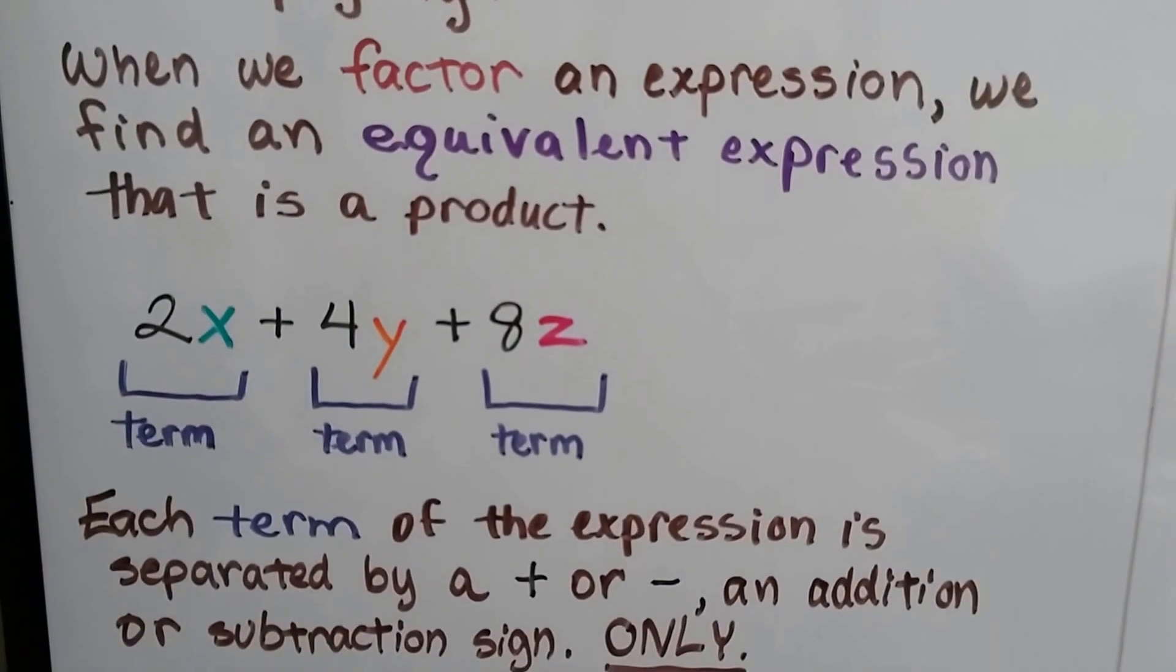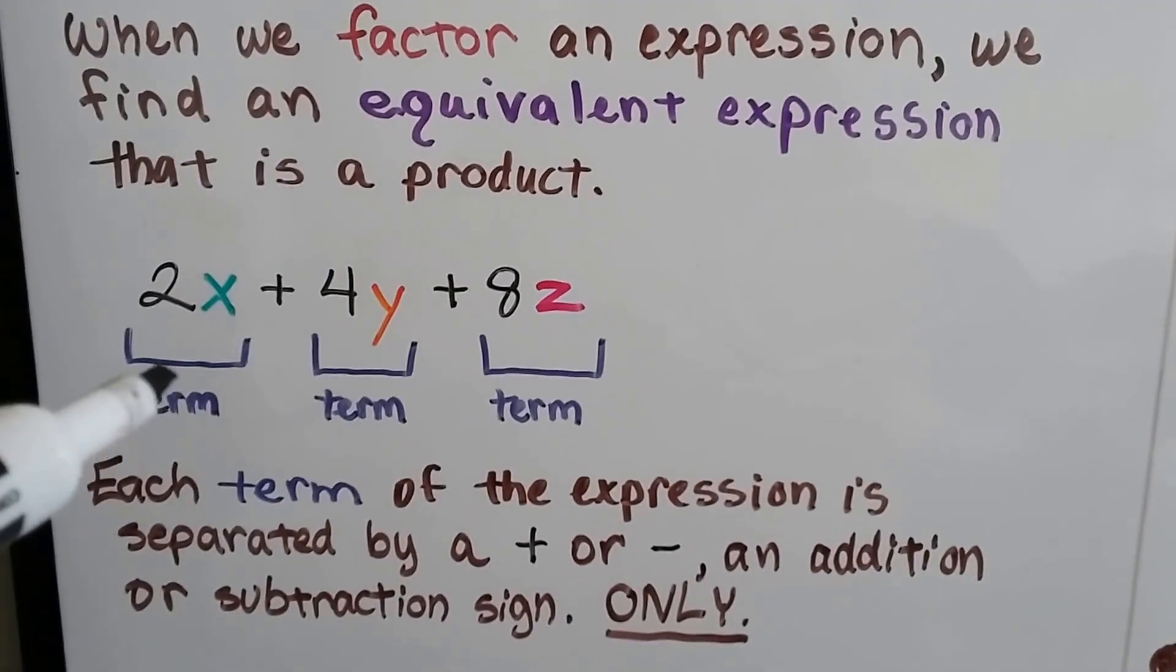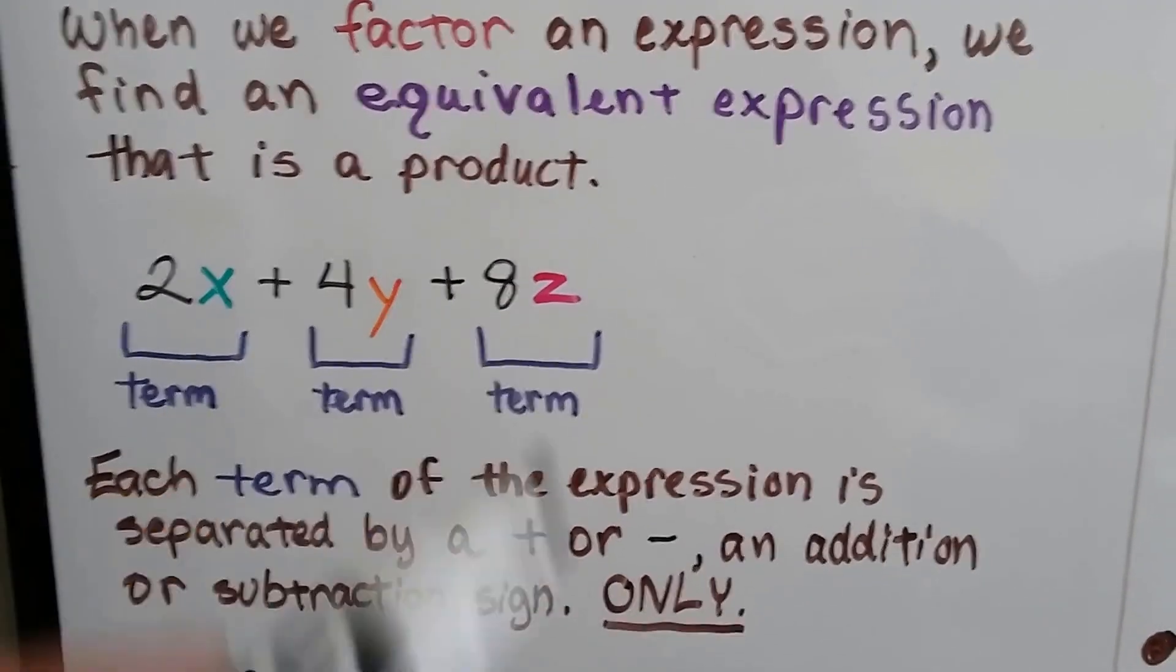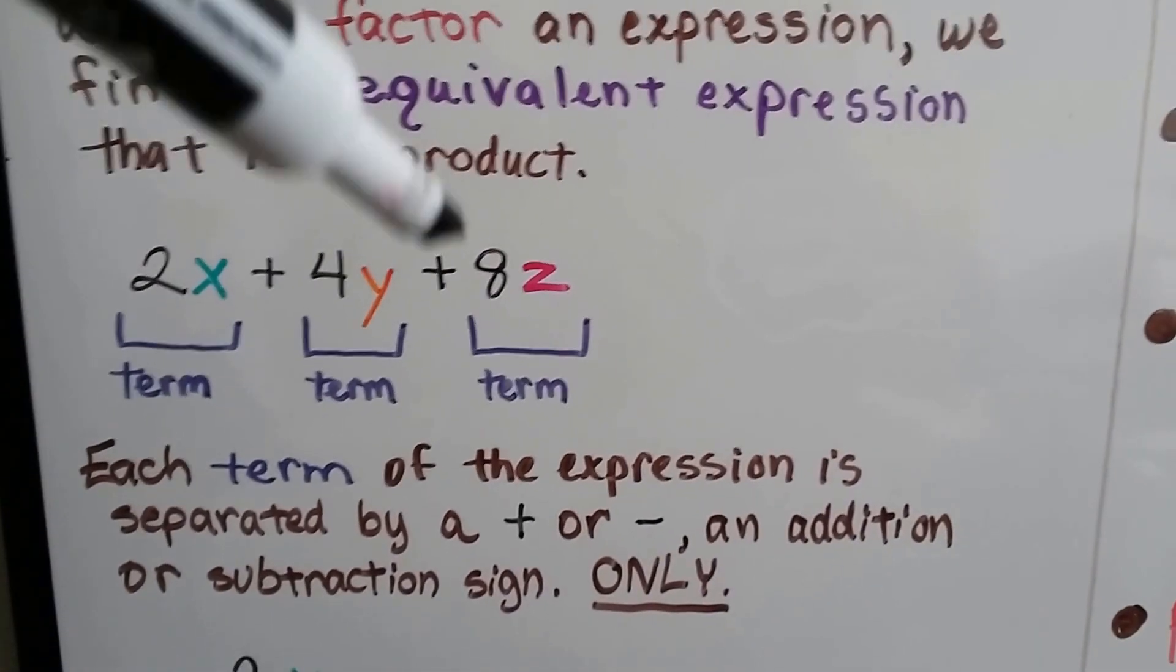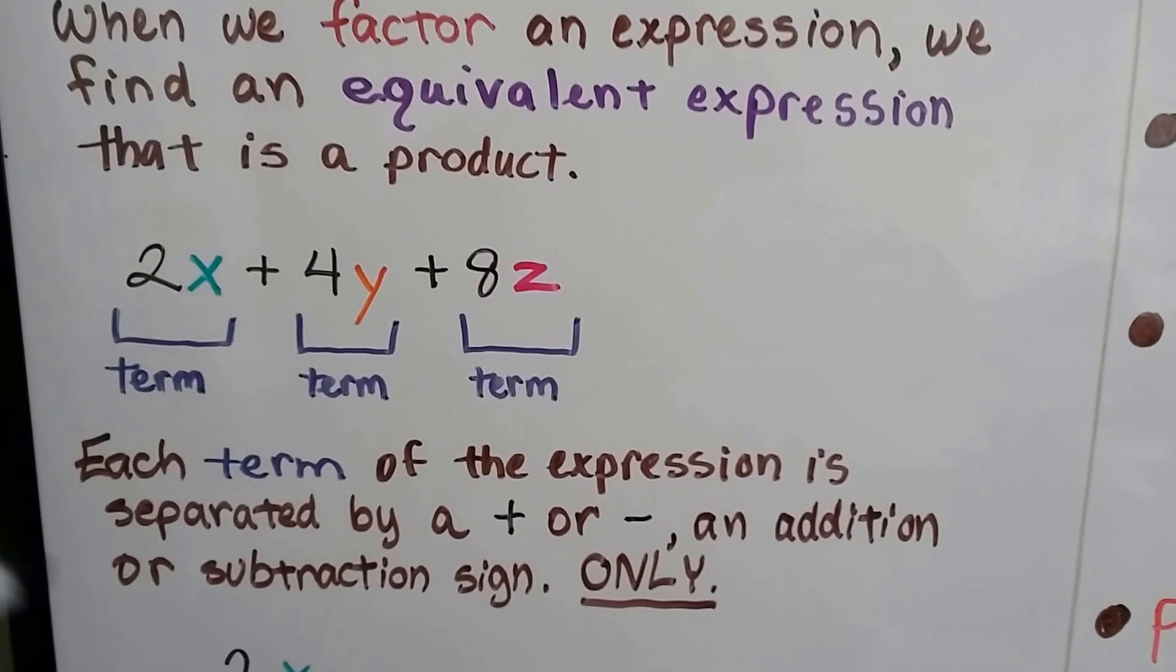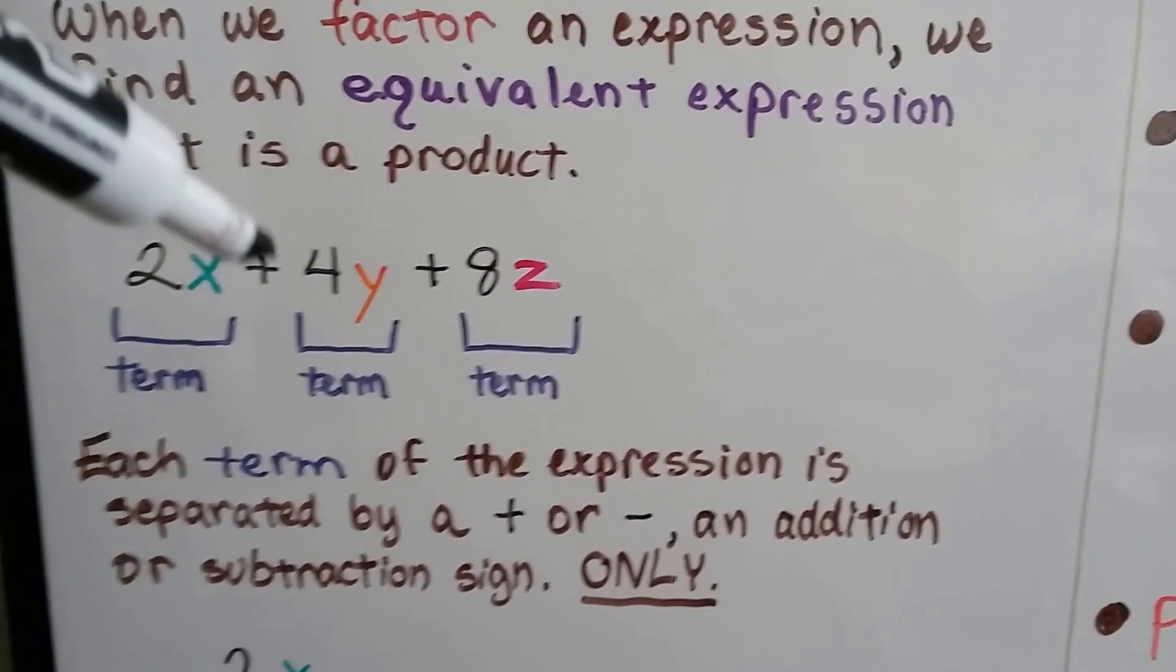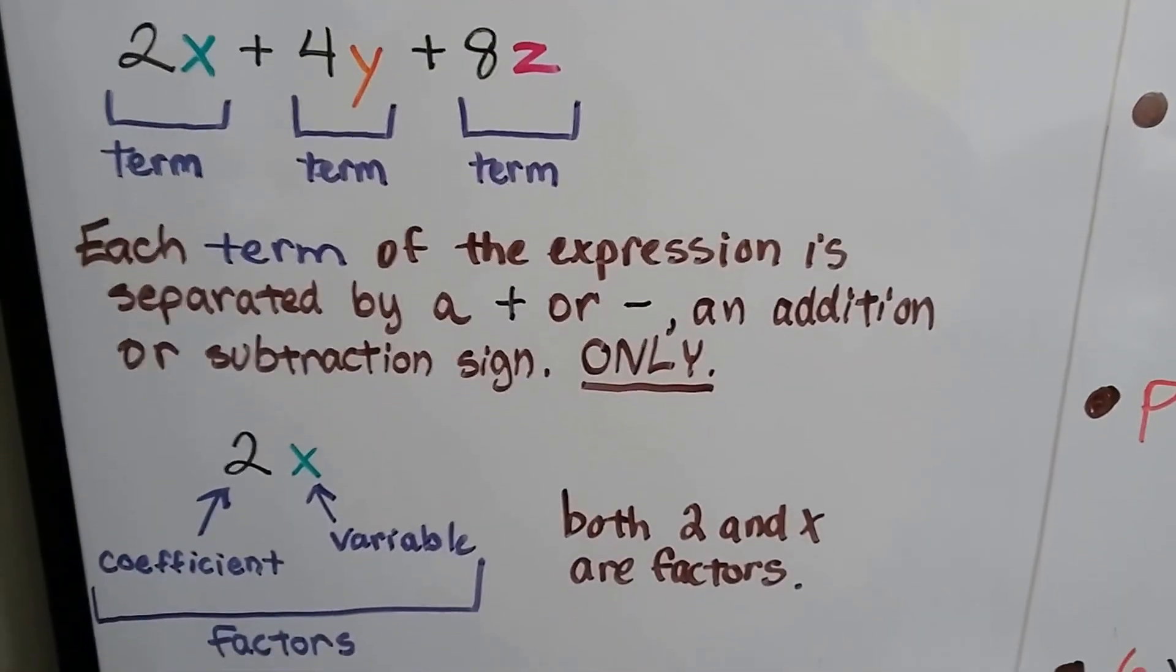When we have 2x plus 4y plus 8z, this is a term, this is a term, and this is a term. Each term of the expression is separated by a plus or a minus sign, an addition or subtraction sign only. Not multiplication or division, just addition or subtraction. That's what separates the terms.